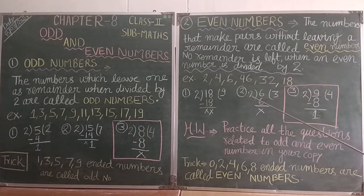When you divide 6 by 2, 2 threes are 6, remainder is 0. So 6 is an even number. Because the remainder is nothing.